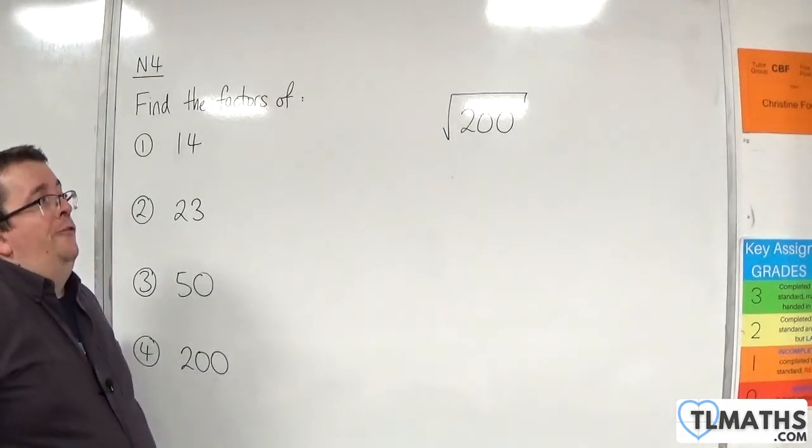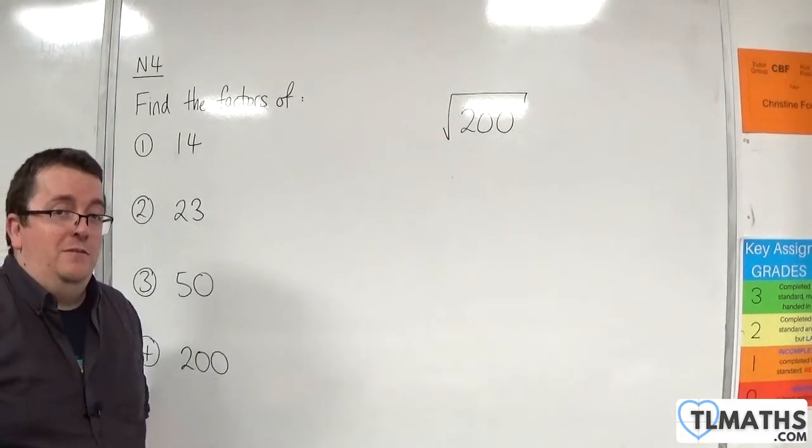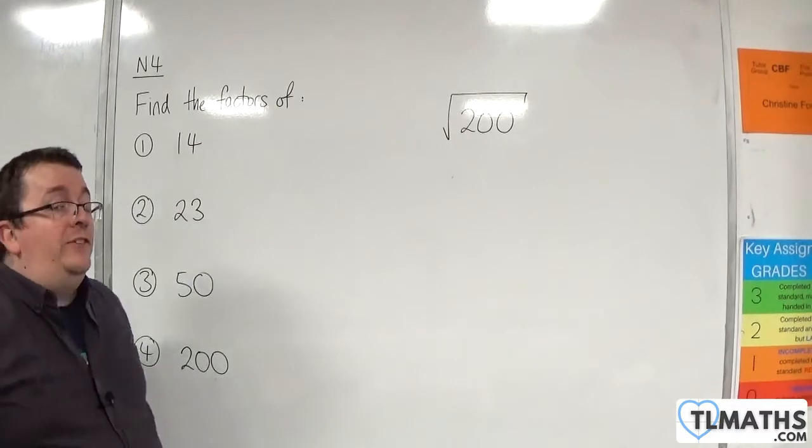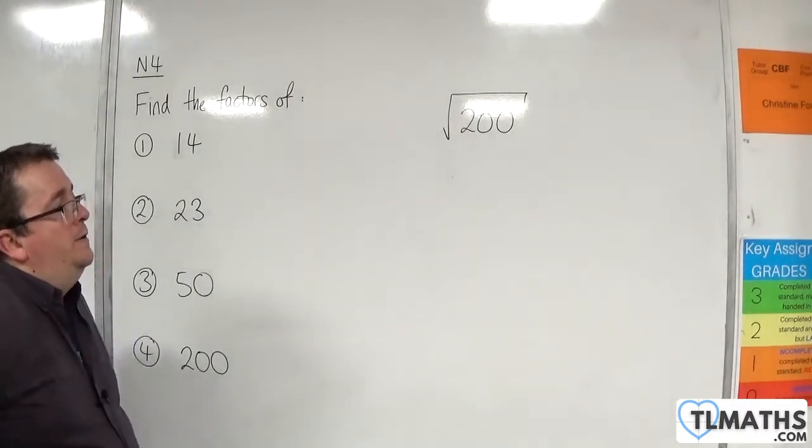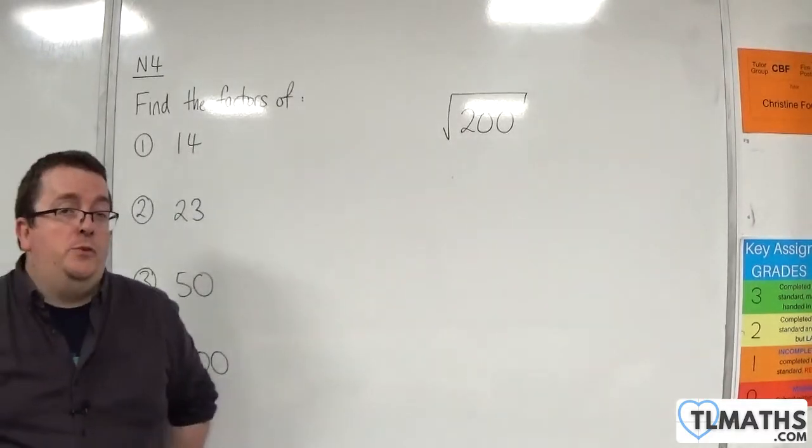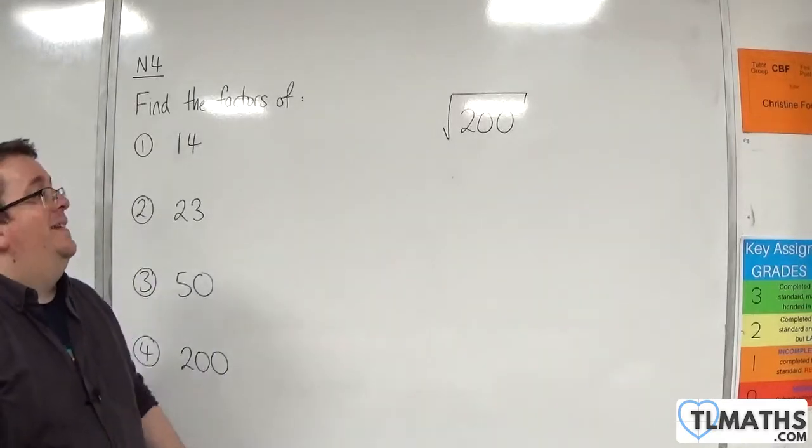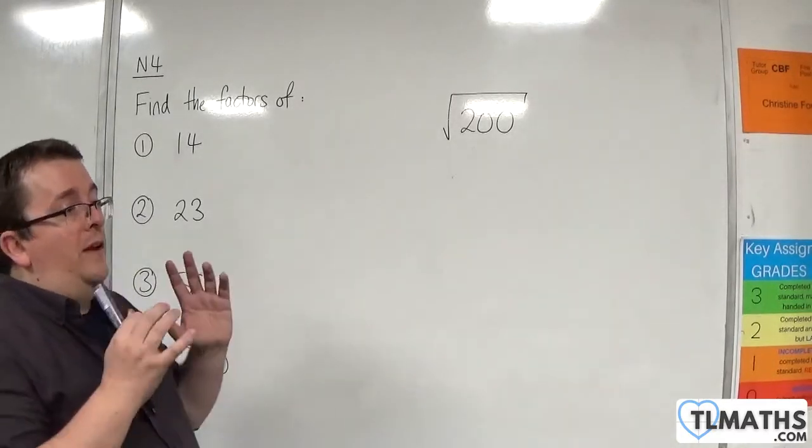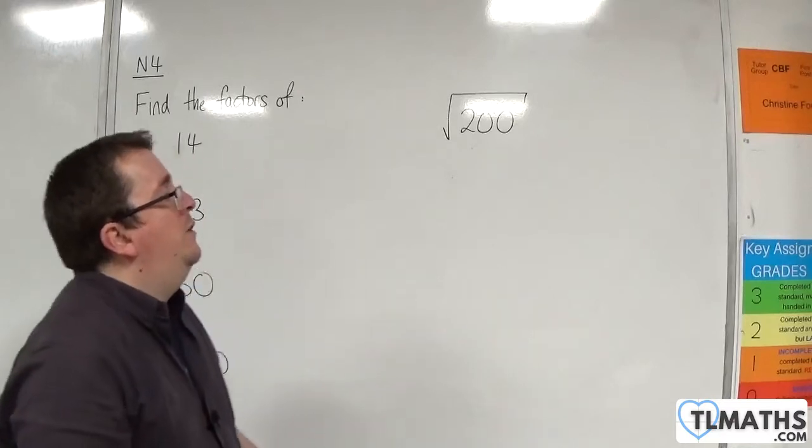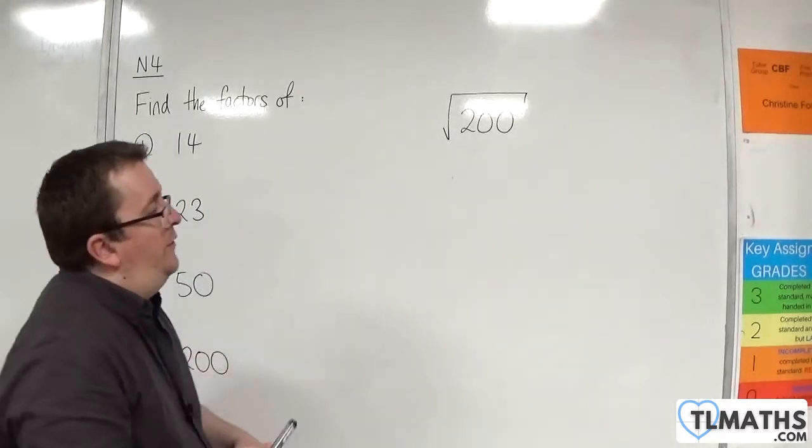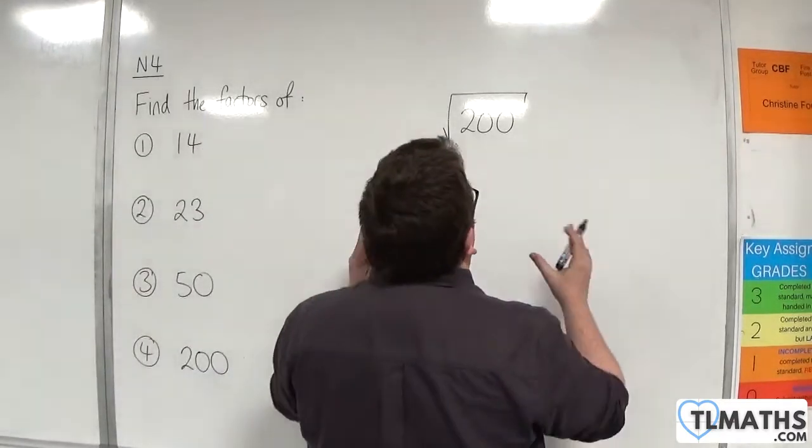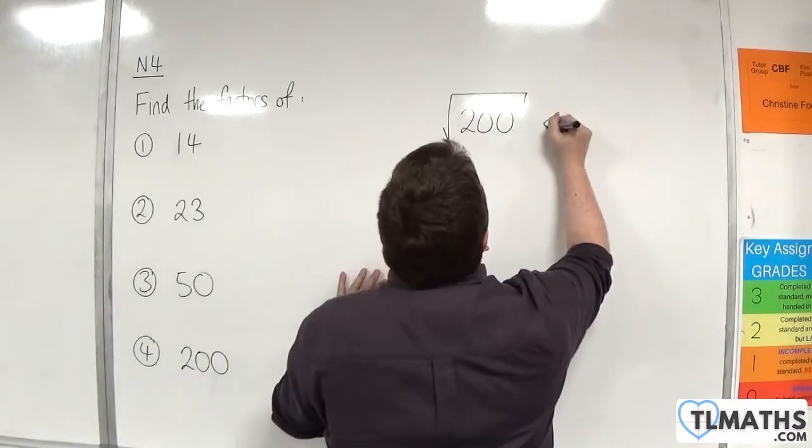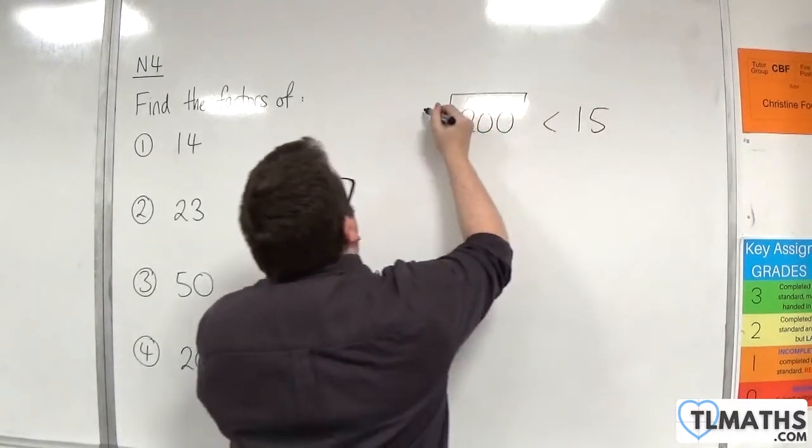So, 14 squared is 196, and 15 squared is 225. Now, they are not square numbers that I would expect everyone to know, but it's useful. So, this has got to be somewhere between 14 and 15.